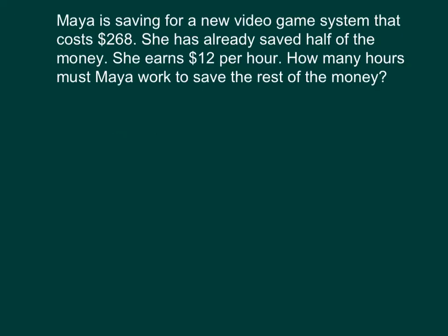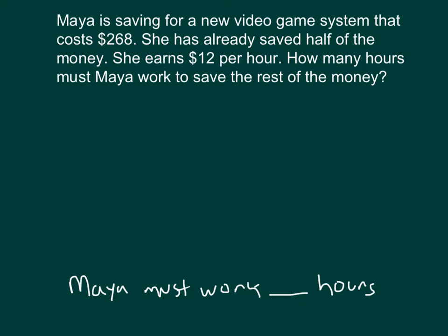Maya is saving for a new video game system that costs $268. She has already saved half of the money. She earns $12 per hour. How many hours must Maya work to save the rest of the money? Start by thinking about that answer and writing out that focused answer: Maya must work some amount of hours to save the rest of the money.